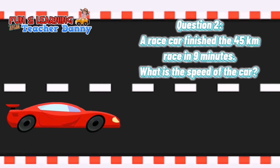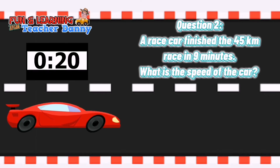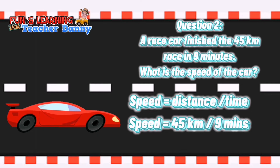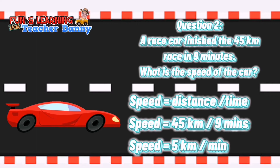Question number 2: A race car finished the 45 kilometer race in 9 minutes. What is the speed of the car? Speed is equal to distance divided by time. The distance is 45 kilometers and the time is 9 minutes. If we divide 45 kilometers by 9, the speed is 5 kilometers per minute.